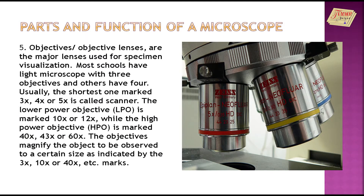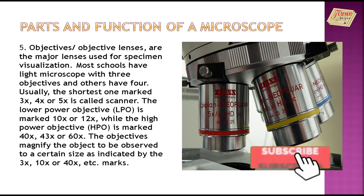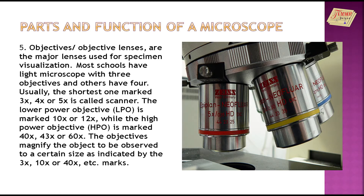Objectives or objective lenses are the major lenses used for specimen visualization. Most schools have light microscopes with 3 objectives and others 4. Usually, the shortest one marked 3 times, 4 times, or 5 times is called scanner. The lower power objective is marked 10 times or 12 times, while the high power objective is marked 40 times, 43 times, or 60 times. The objectives magnify the object to be observed to a certain size as indicated by the 3x, 10x, or 40x marks.